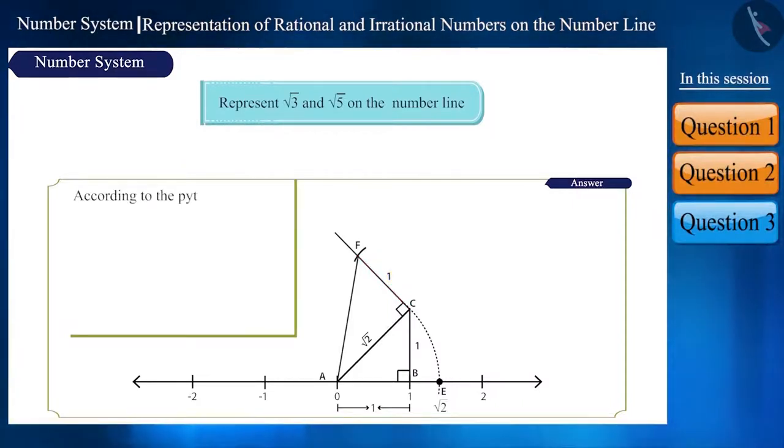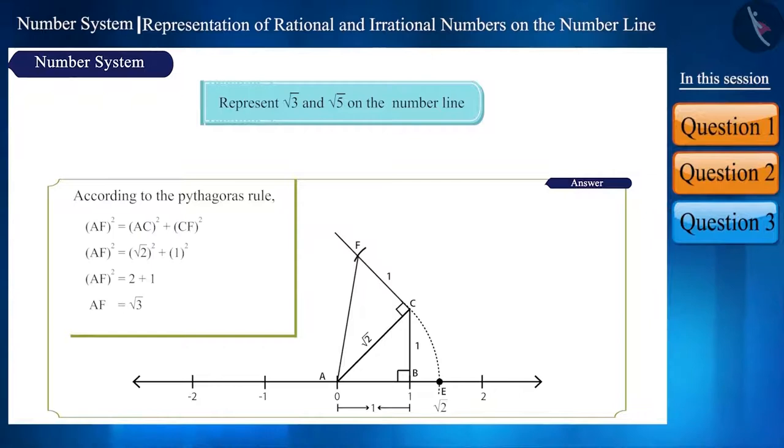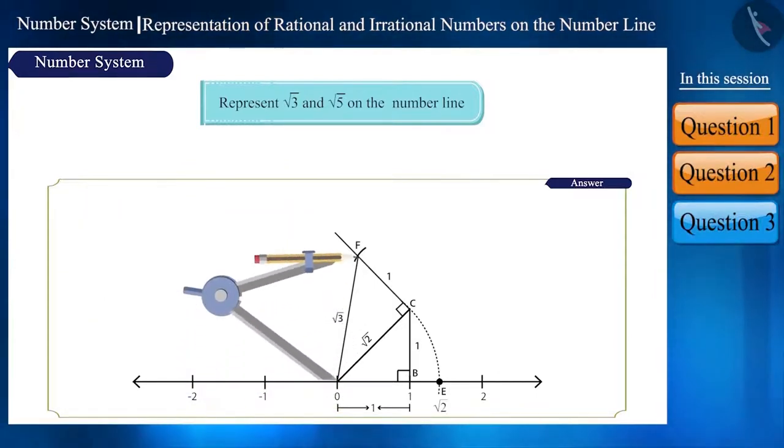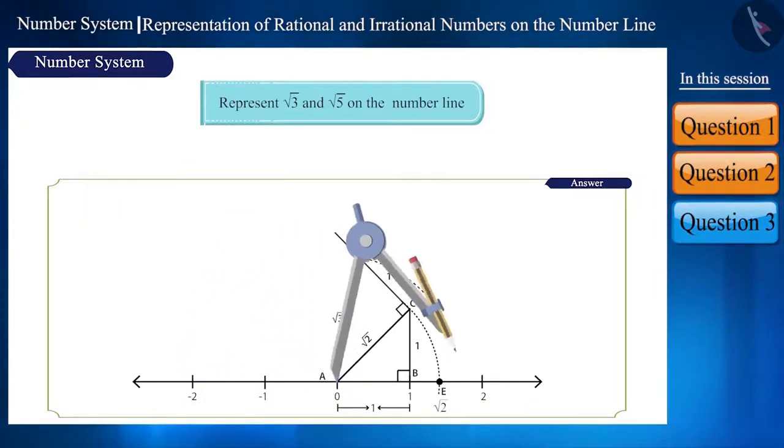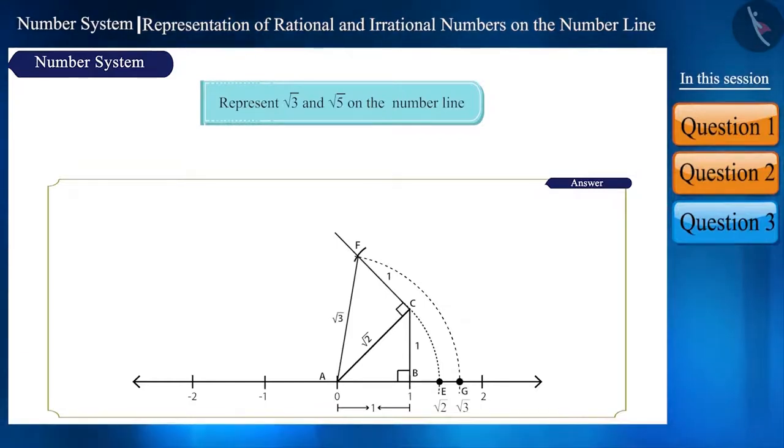Using Pythagoras' theorem, we can find the length of AF which will be root 3. Now measure the length AF using a compass and taking center as point A, draw an arc on the number line which cuts it at point G and this point G represents root 3.